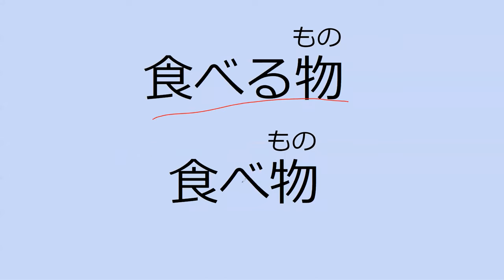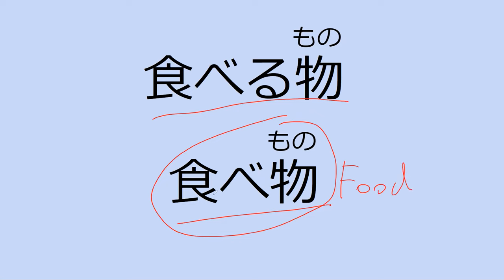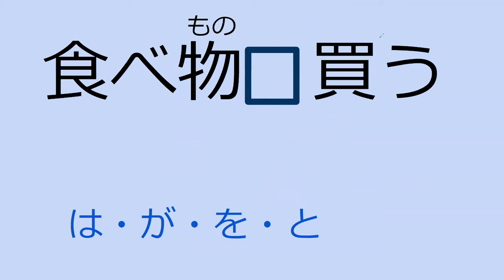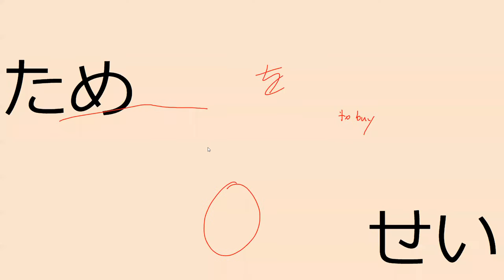So I have taberumono and tabemono — these are actually very similar. Tabemono is literally the word for food. Taberumono is mono with the relative clause taberu attached to it, so this means 'things to eat' or 'things that I will eat.' What particle would we use with kau? So to buy food — taberumono wo kau. Correct, it's wo because kau is a direct-action verb. Perfect.